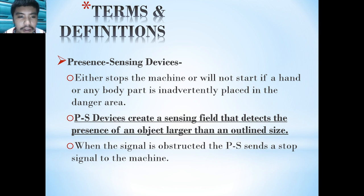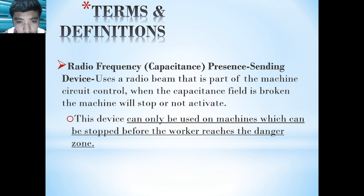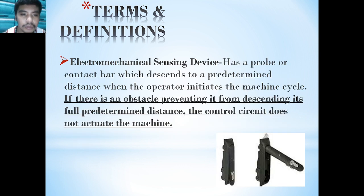Presence sensing devices either stop a machine or will not start if a hand or any body part is inadvertently placed in the danger area. These devices create a sensing field that detects the presence of an object larger than a defined outline size. Radio frequency capacitance presence sensing devices use a radio beam that is part of the machine circuit — when capacitance is broken, the machine will stop or not activate. This device can only be used on machines which can be stopped before the worker reaches the danger zone.